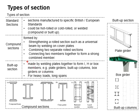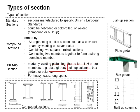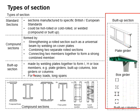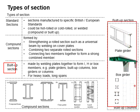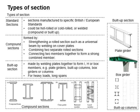Build-up sections are made by welding plates together to form an I or box member, such as plate girders, build-up columns, box girders, or columns. These are normally applied for heavy loads and long spans which cannot be catered for by standard sections, and are custom-made to address situations beyond normal circumstances.